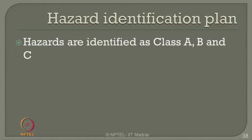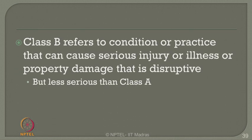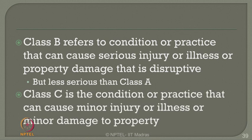Hazards are generally identified as Class A, B, and C. Class A refers to conditions or practices that can cause permanent disability, loss of life, loss of body part, or extensive loss of property. Class B hazards refer to conditions or practices that can cause serious injury or illness or property damage, but are less serious than Class A. Class C refers to conditions or practices that can cause minor injury, illness, or minor property damage. Class A hazards are most dangerous and can ripen into accidents, but A, B, and C are all equally important. One must prepare a hazard evacuation and identification plan for different categories.